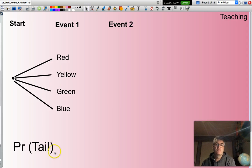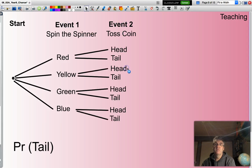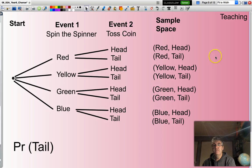Looking at the next one, what about the probability of a tail? Again, I'll just populate all this. So how many outcomes do I have? I have a total of eight outcomes.